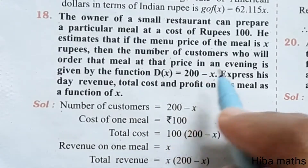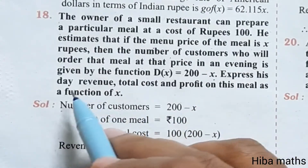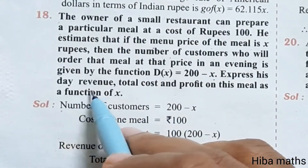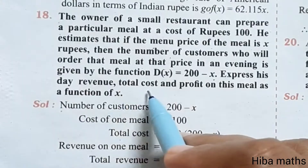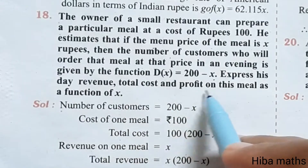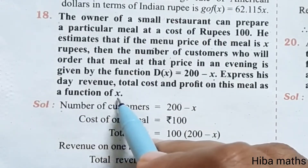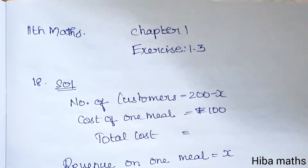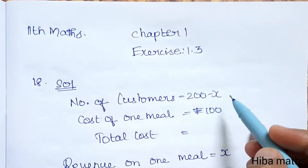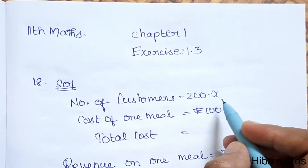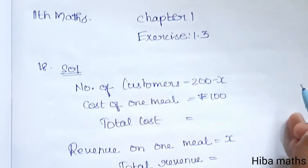That is the number of customers. Express his day revenue, total cost, and profit on this meal as a function of x. Solution: number of customers is equal to d of x is equal to 200 minus x.